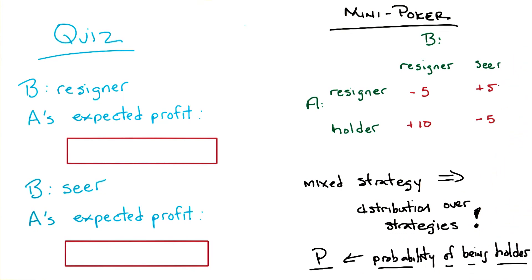Wait, wait, wait. If B is always a resigner—B is always a resigner—then what is A? A is going to choose to be a holder with probability P. Oh, so you want this to be a function of P.